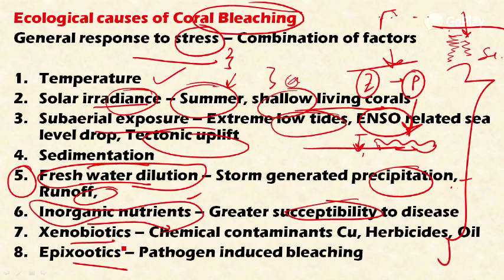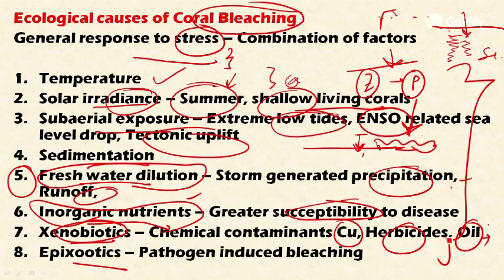The seventh reason is xenobiotics — toxic chemicals to the organisms. These include chemical contaminants such as copper, herbicides, and oils, which are all leading to destruction of the zooxanthellae and thereby causing coral bleaching.